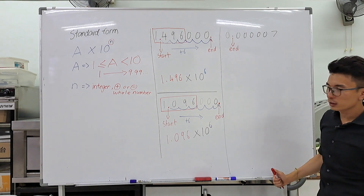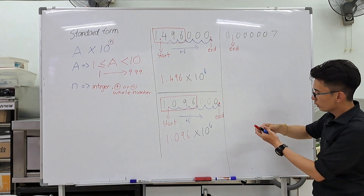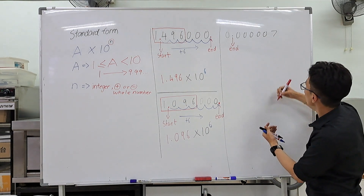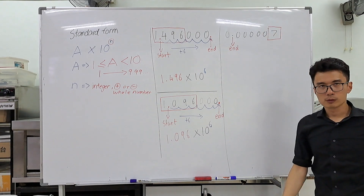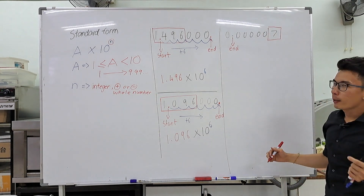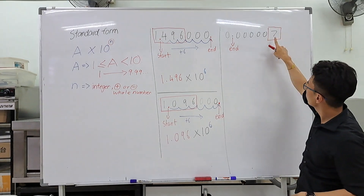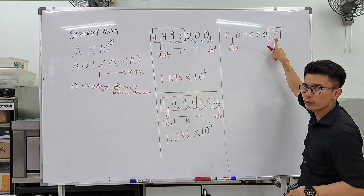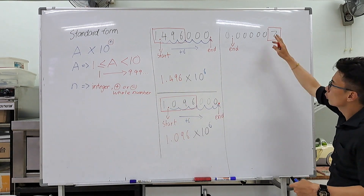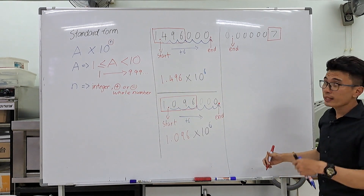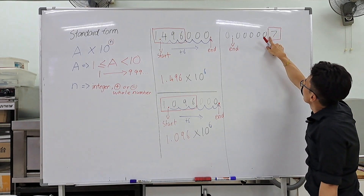The next thing is I will draw a box around my numbers. In this case, the only number I will draw the box around is the number seven. Now I need to find my starting point — where should I put the decimal point in this seven to satisfy the required range? There are two locations: either on the left or on the right.